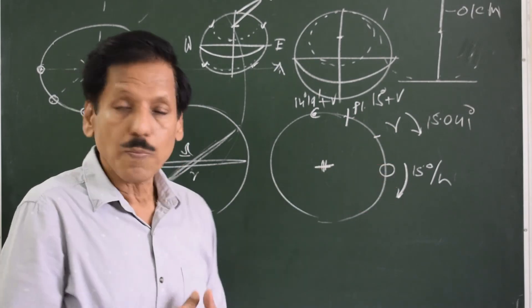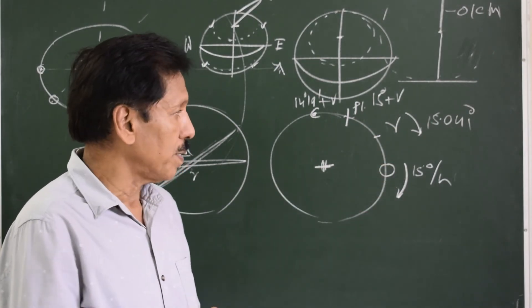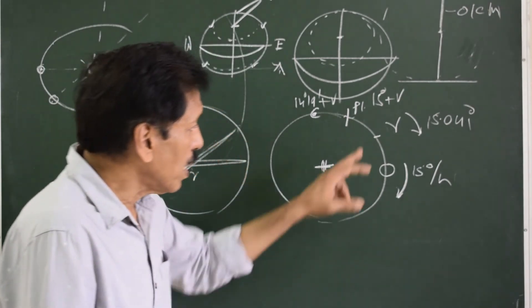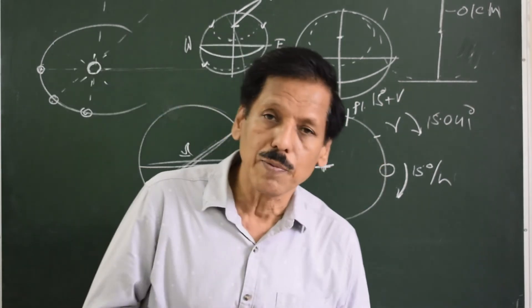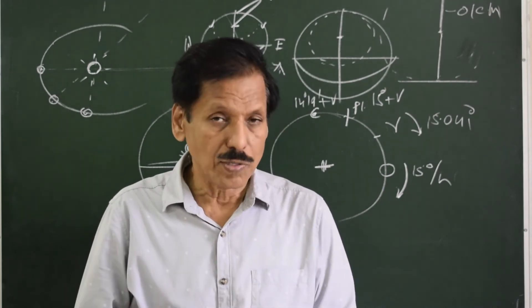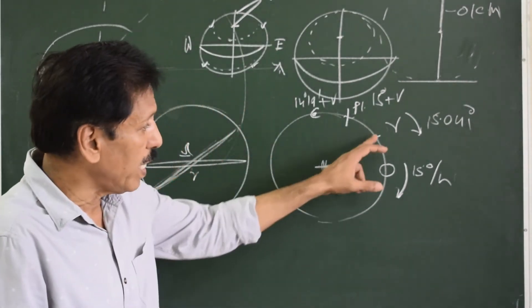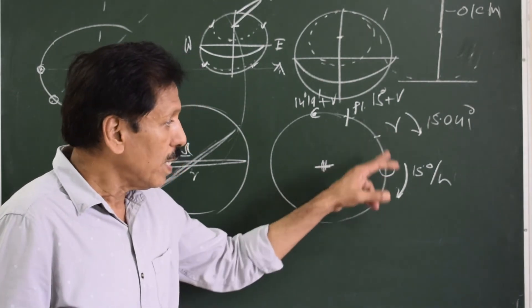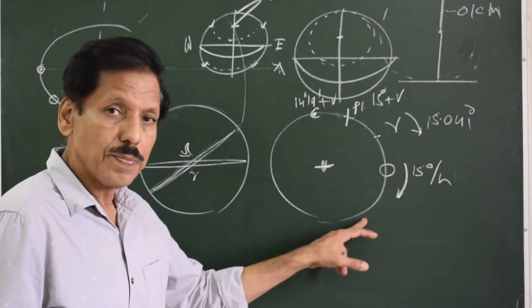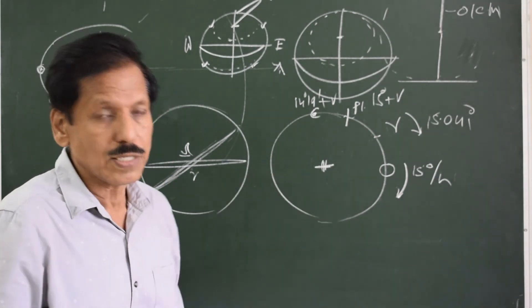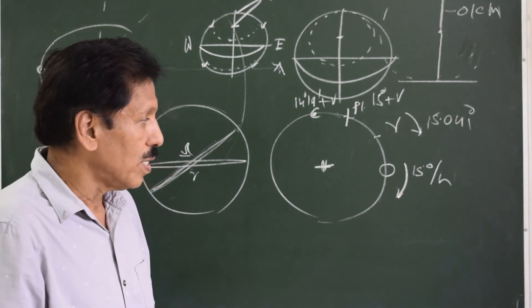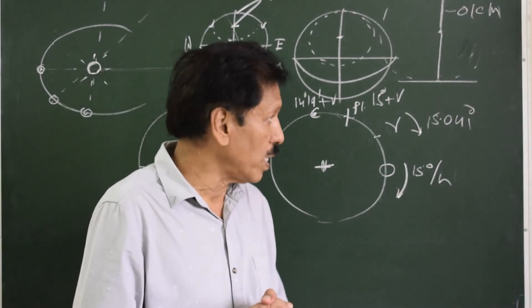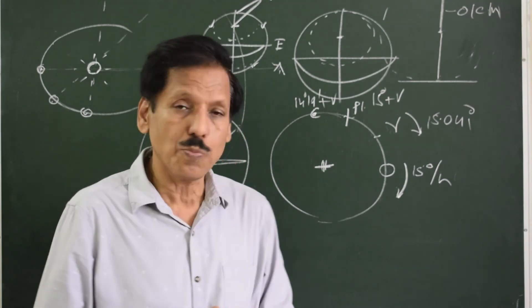That means once the Aries overtakes the sun, how much time it will take to overtake the sun for the second time. That means once the Aries meets the sun, in how much time the Aries will meet the sun again. Because once the Aries has overtaken the sun, Aries has to overtake another 360 degrees. So it is interesting to note, Aries is overtaking at the rate of 0.041 degrees per hour. To overtake another 360 degrees, it will take one year.